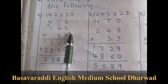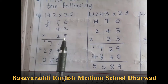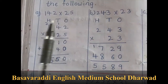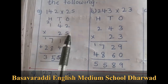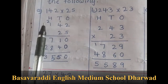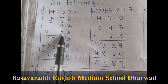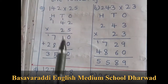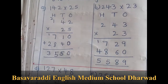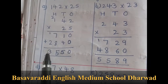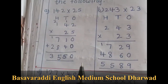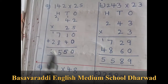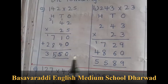So 142 into 25: 5 times 2 is 10, 1 is carry over. 5 times 4 is 20, plus 1 is 21, 2 is carry over. 5 times 1 is 5, plus 2 is 7. Moving to tens place: put 0. 2 times 2 is 4, 2 times 4 is 8, 2 times 1 is 2. Adding: 0 plus 0 is 0, 1 plus 4 is 5, 7 plus 8 is 15, and 1 plus 2 is 3. The answer is 3550.